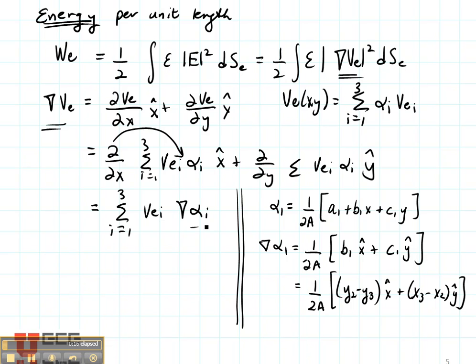Well, let's look at one of those shape functions. Alpha 1 is 1 over 2A times A1 plus B1X plus C1Y. If we take its gradient, this is what we're going to end up with. And you can see that that is just a function of the size, shape, and location of the triangle. Its node locations, X1Y1, X2Y2, and so on.